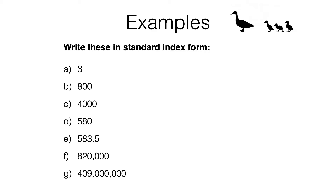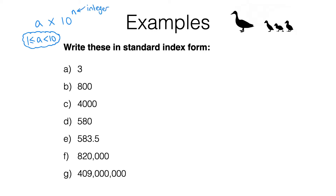In the previous video we were given numbers in standard form, or standard index form as it's also known, and we had to convert those into ordinary numbers. In this video we are given ordinary numbers and what we have to do is convert these into standard form. To quickly recap, that means we need to write the numbers as a times 10 to the power of n, where a is some number that has to be at least one but less than 10, and n has to be an integer — that means it has to be a whole number.